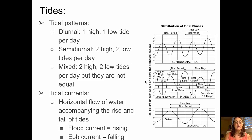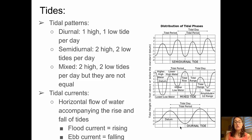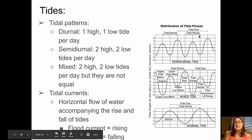Now turning to tidal patterns and tidal currents. There are three different types of tidal patterns. The first is called diurnal. In a diurnal tidal pattern, we have one high tide and one low tide per day, and you can see an example of a diurnal tide at the bottom diagram. In a semi-diurnal tide pattern, we have two high and two low tides per day, and the highs are about the same and the lows are about the same. You see an example of a semi-diurnal tide pattern in the top diagram.